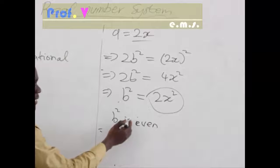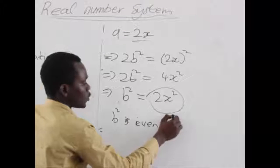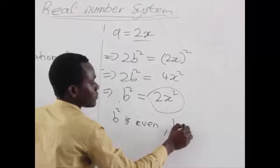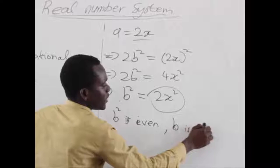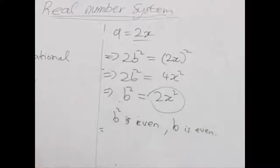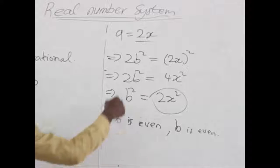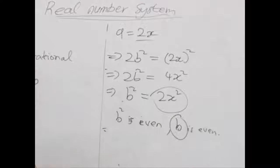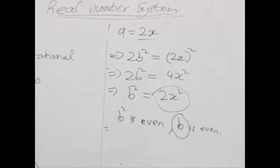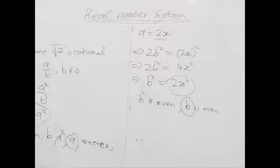And if b squared is even, automatically b is also even. And if a is an even number and b is also an even number, there is no way you can get them in their simplest form.